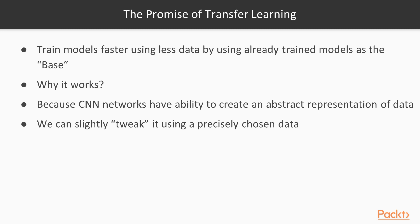We tweak this trained network using very precisely chosen data. We have this general abstract network and we can train it with just a little bit of data that we're really interested in — usually data that is closely related to the problem we're trying to solve. We get the power of all those patterns and distinctions already inside the network and can basically just tweak it for our specific problem.